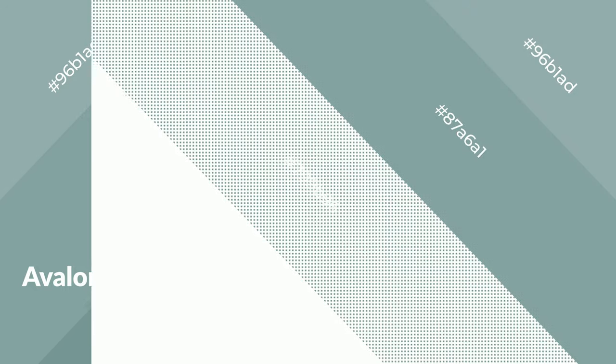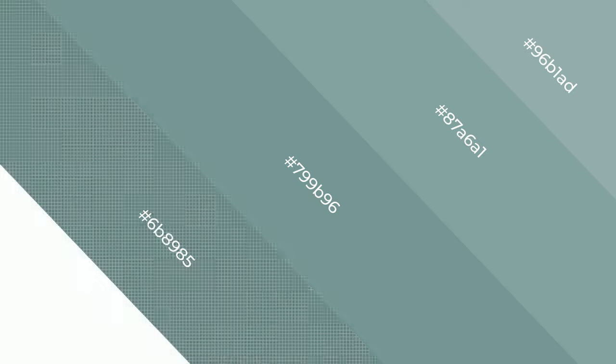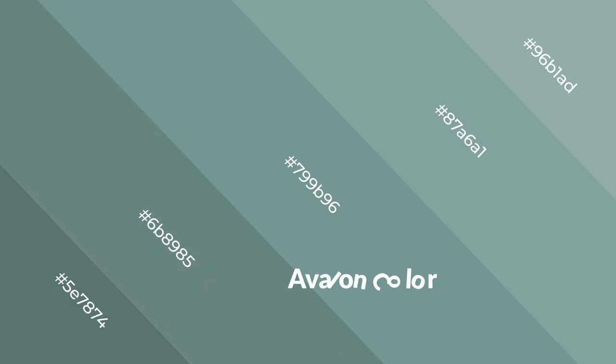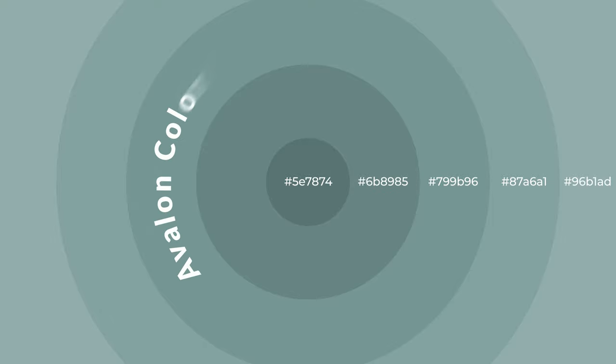Cool colors are like water, ice, sky, grass, soft, and snow. You can see them used in baby products.